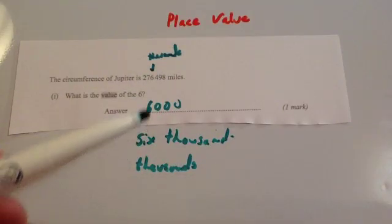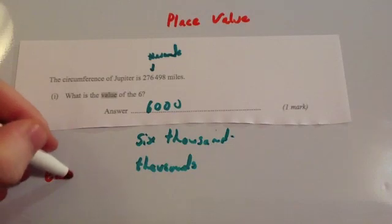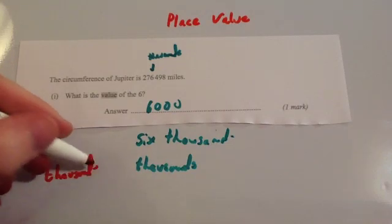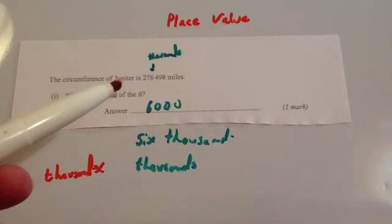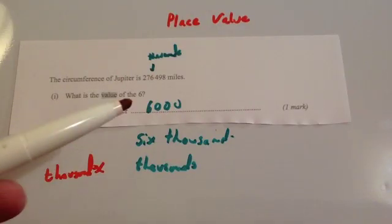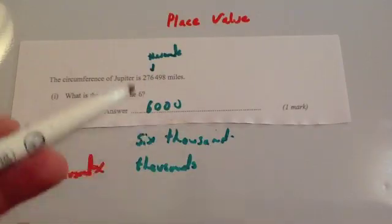What you cannot write though is thousand - that would be wrong. You can't write thousand as a singular because it's six thousands, but I would just write six thousand as one number or one word.